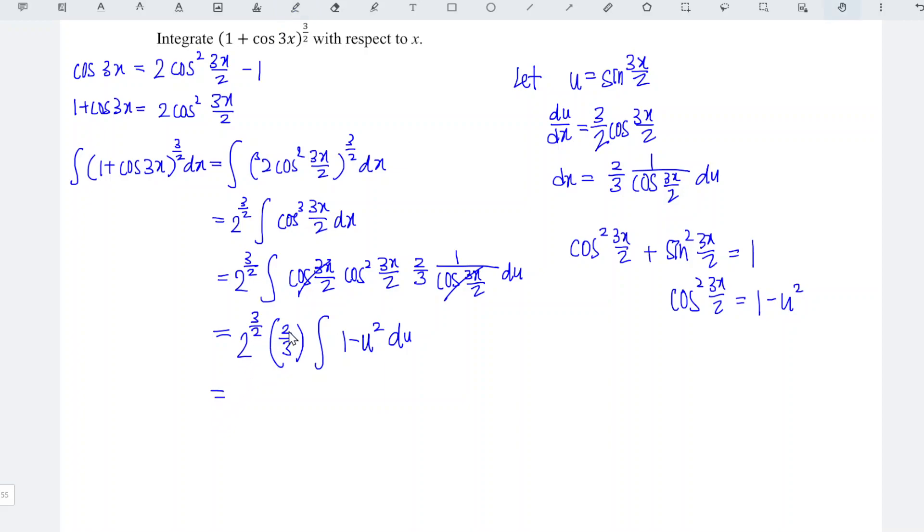So this is equal to 2 to the power of 3 over 2 times 2, which is 4 times square root of 2 over 3. Integrate 1 to get u, and integrate u squared—power plus 1 over power plus 1. Remember, we have to add constant C.